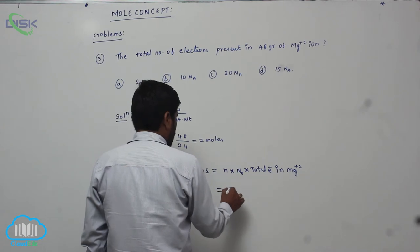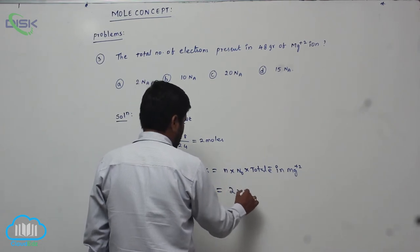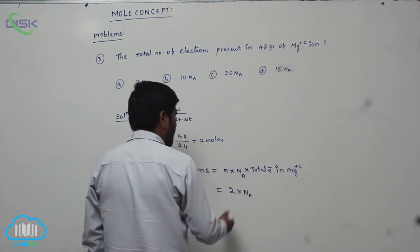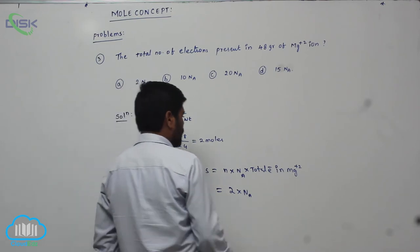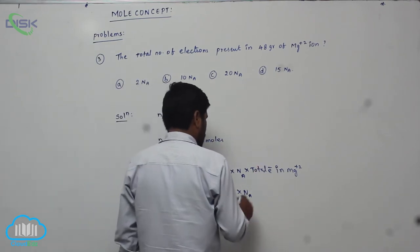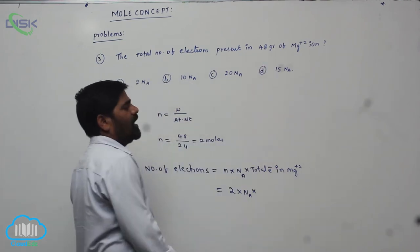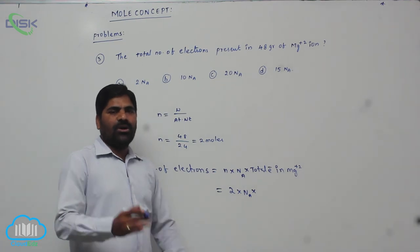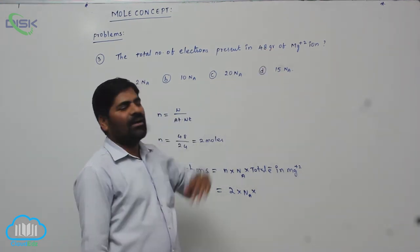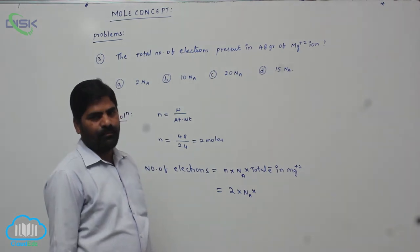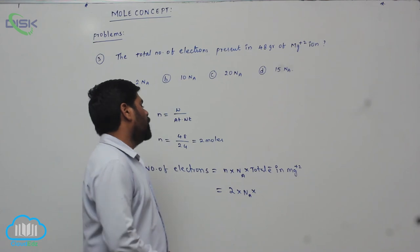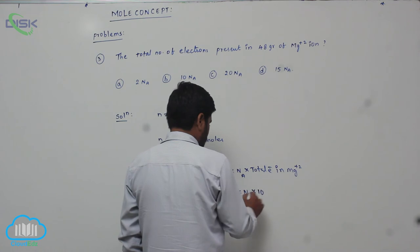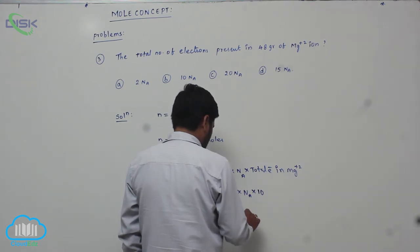This equals 2 Avogadro number — we are not substituting the value 6.022 into 10 power 23. Magnesium's atomic number is 12, so it loses 2 electrons and converts into Magnesium plus 2, which contains 10 electrons. Therefore the answer is 2 × Nₐ × 10 = 20Nₐ.